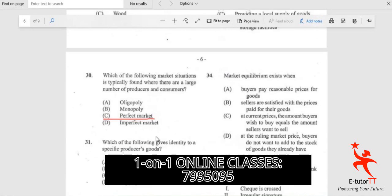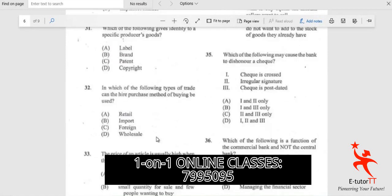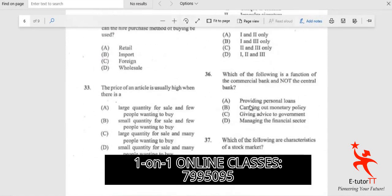Question 34: The price of an article is usually high when there is... So this has to do with demand and supply, as well as pricing. This is on the topic demand and supply, and the answer here is D.